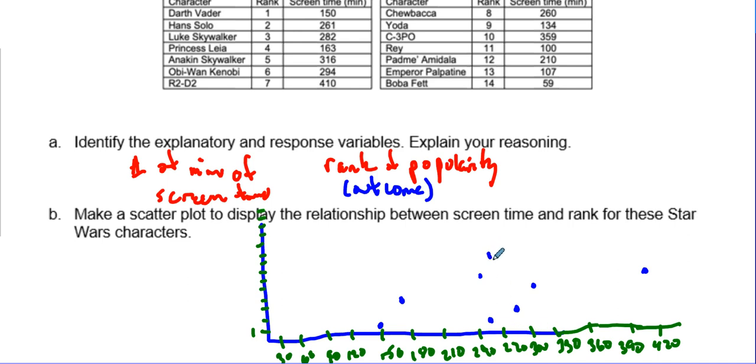Right there. 134 is going to have a rank of nine. 359 is going to have a rank of 10. 100 is going to have a rank of 11.